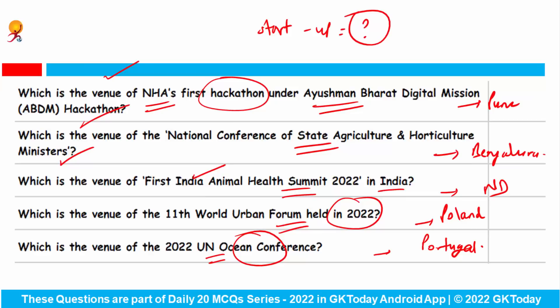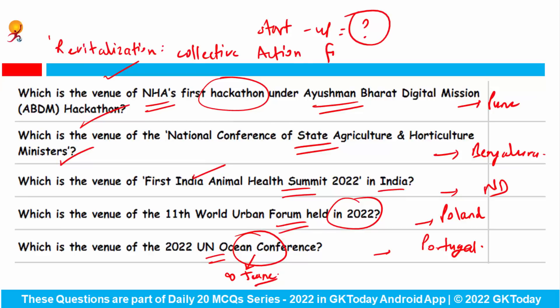Which is the venue of the 2022 United Nations Ocean Conference? The venue was Portugal. World Ocean Day is observed annually and this year the theme was 'Revitalization: Collective Action for Ocean'.